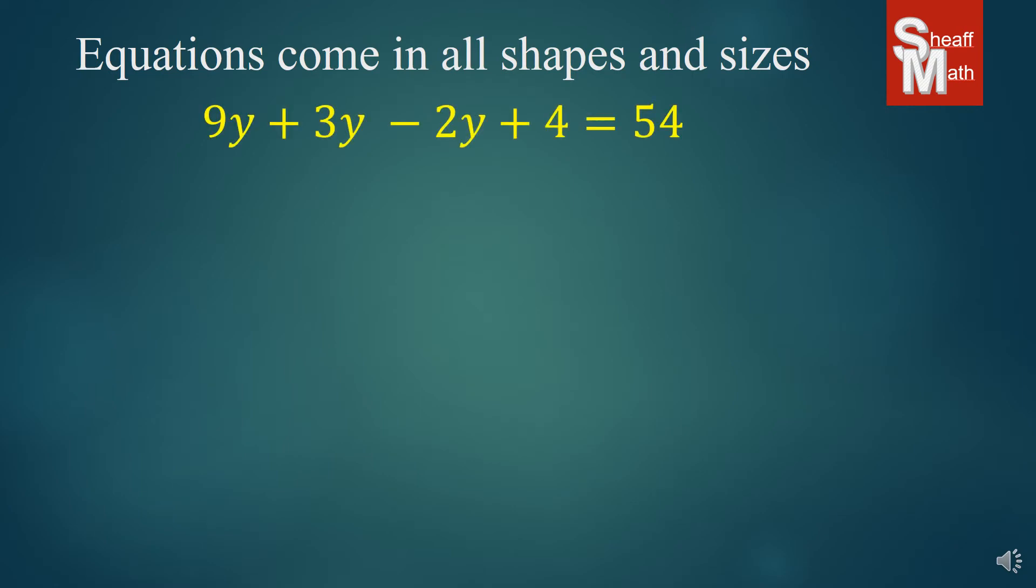Now we have a bunch of y's on the left here. So we're going to have to add all of them together. 9 plus 3 is 12, minus 2 is 10. So we have 10y plus 4 equals 54.